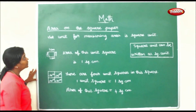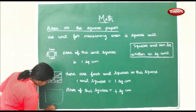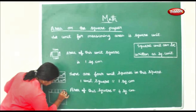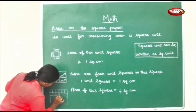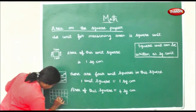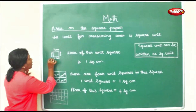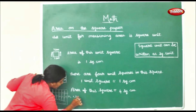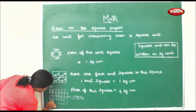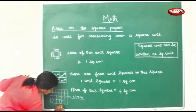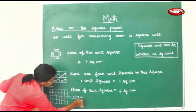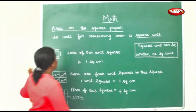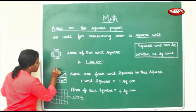Now we shall see area on this scrap paper. You all must have seen your Mac's notebooks — your paper is like this with small small boxes. Each box is measured as one square centimeter. The unit for measuring area is a square unit.